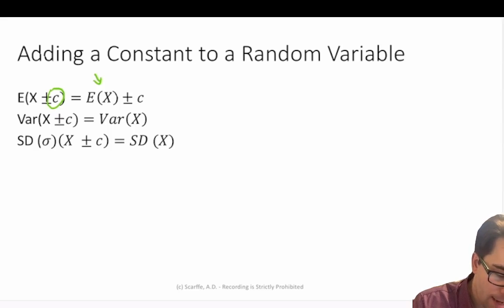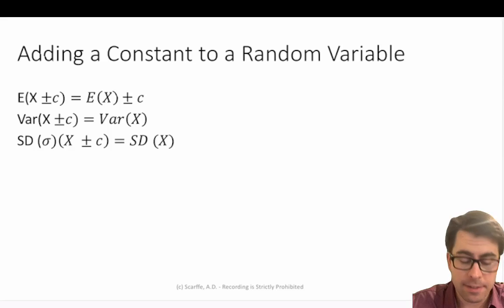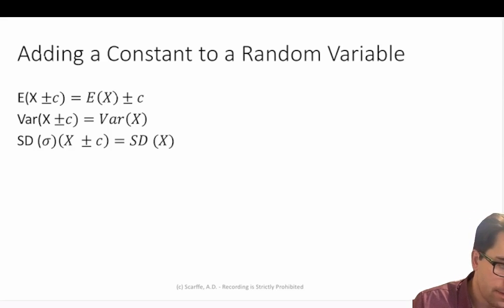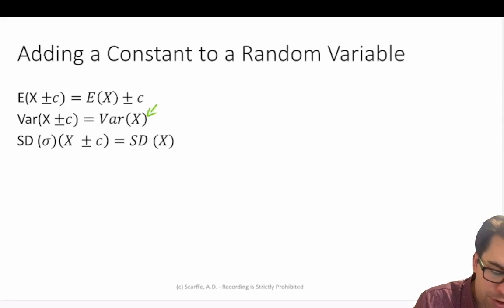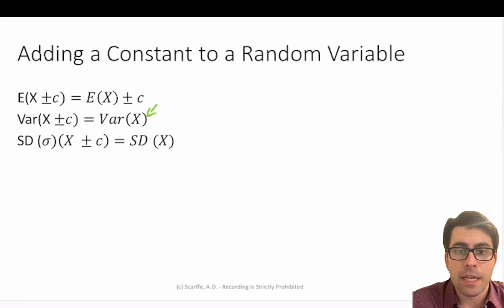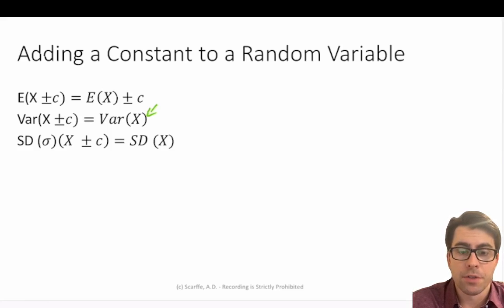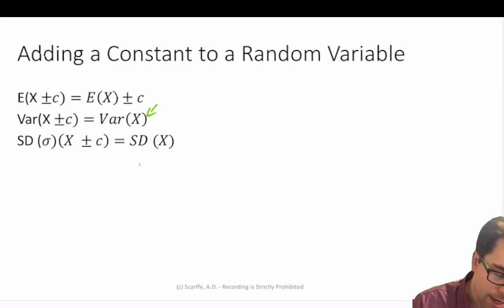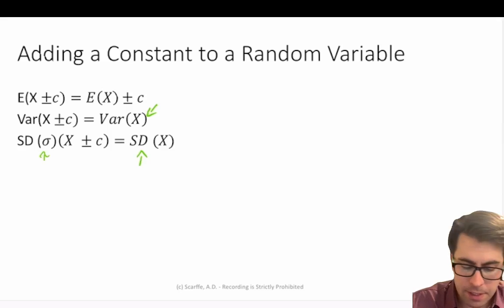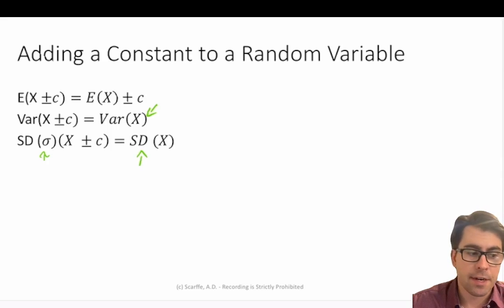When we add and subtract a constant to a random variable x, our variance does not change — our variance remains the same. So the variance of x plus or minus said constant is simply equal to our initial variance of x. And as we remember from our introduction to standard deviation, standard deviation is equal to the square root of the variance, so if the variance does not change, then neither does the standard deviation. The standard deviation of x plus or minus a constant is simply equal to the initial standard deviation of x.